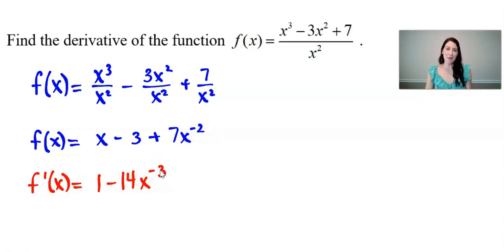To finish this off I'm going to go ahead and rewrite this so it doesn't have a negative exponent anymore. And I get my final answer of f prime of x equals 1 minus 14 divided by x cubed.